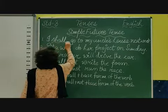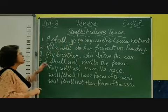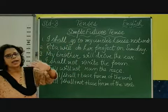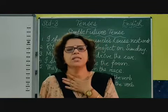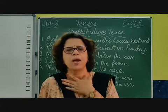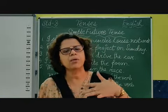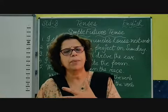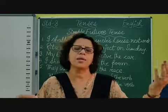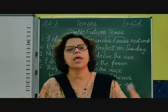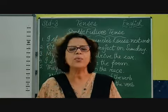In simple future, we use 'shall' with the verb. Children, remember: 'shall' is used for 'I' and 'we' — both. 'I' means the first person — I am talking about myself. 'We' means when I am there and with me some other people are there, one or more. Because I am also there when somebody else is also there, it becomes 'we'. So with 'I' and 'we', we use 'shall'.